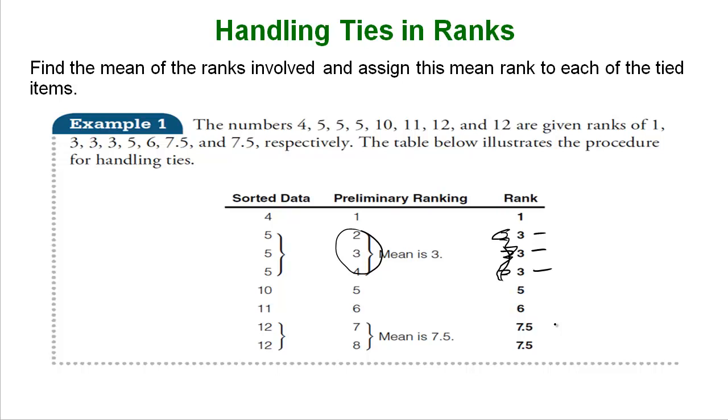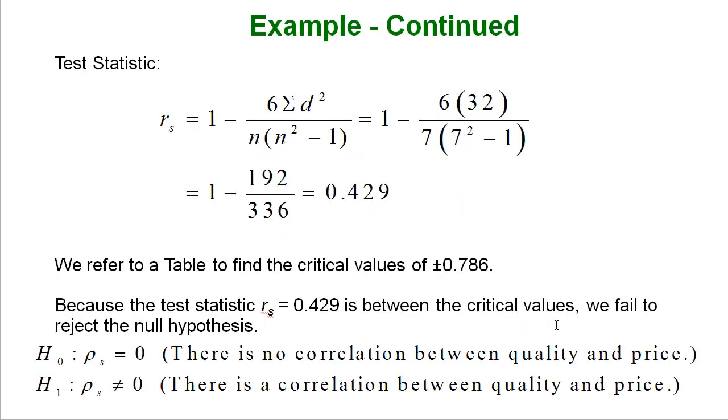Now if we had ties of course we would have to use the more complicated formula but because we didn't have ties we could just use the differences. So we take the differences, throw it into this simple formula, calculate everything out and there is our r. This is the same r you would get from technology if you were running a normal correlation coefficient. This is your correlation coefficient more or less. This is your .429.